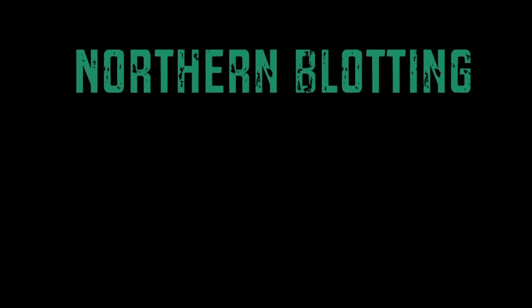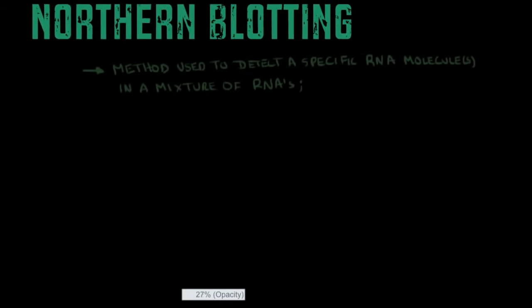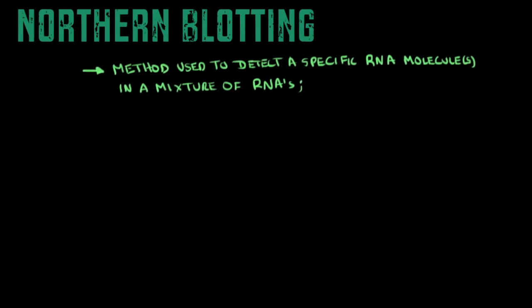As the name indicates, southern blotting and northern blotting have similar functions. But while you use southern blotting to detect a specific DNA molecule within a mixture of other DNA molecules, you would use northern blotting to detect an RNA molecule, or a few RNA molecules, in a mixture of other RNA molecules.